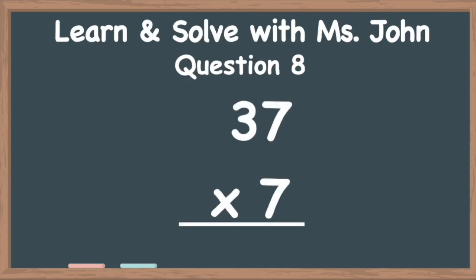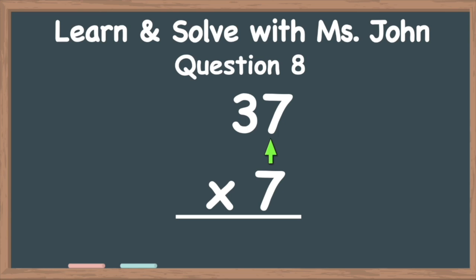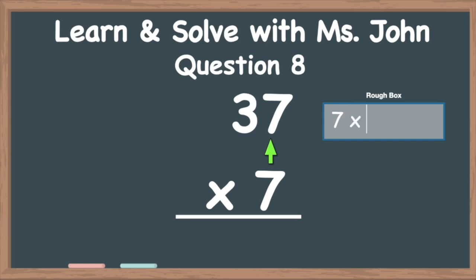Question number eight: 37 multiplied by seven. When solving this question, we're going to first do seven times the ones column — that would be seven times seven. Then we're going to do seven times the tens column, which will be seven times three. Let's begin. So when doing seven times seven, we're going to first draw a rough box and write seven times seven. Seven times seven equals 49.